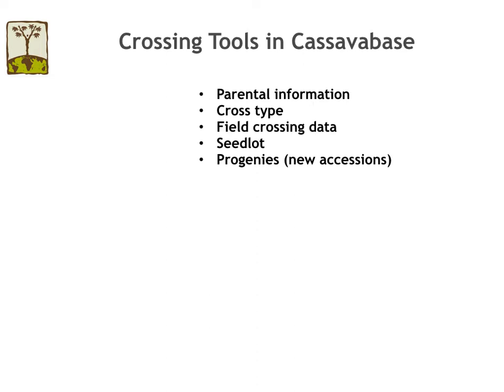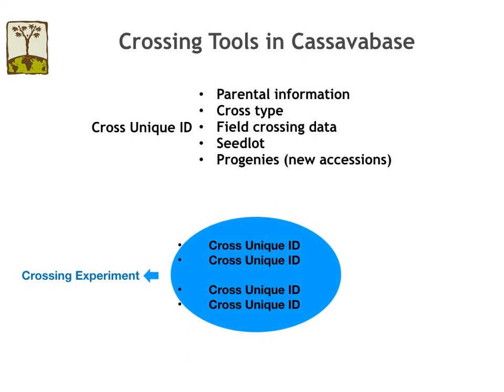CassavaBase can store different types of crossing data including parental information, cross type, field crossing data, seed lot, as well as progenies derived from the cross. All of the data related to each cross is linked to a unique identifier in the database, which we call the Cross Unique ID. CassavaBase provides several levels of organization. Several crosses from the same crossing block, or crosses done in the same year, or crosses having the same breeding objective, can be grouped together in a crossing experiment.